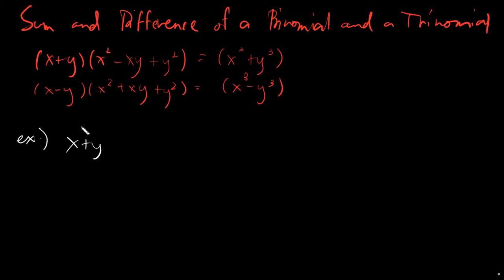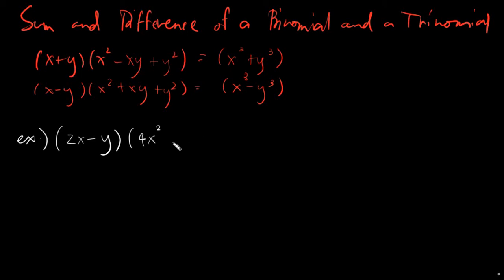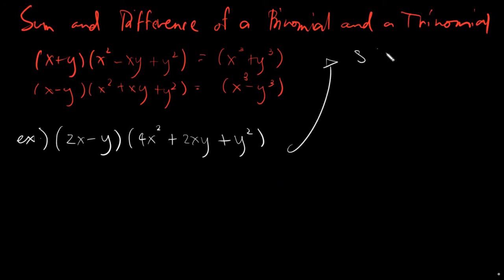Let's change it up a little bit. Say we have (2x − y) and we have (4x² + 2xy + y²). We have this given, and we want to determine whether this given falls under the SDBT form — sum and difference of a binomial and a trinomial.